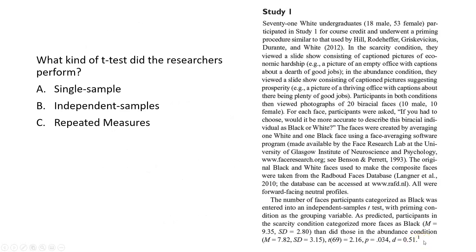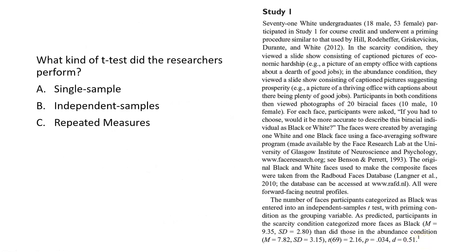What kind of t-test did the researchers perform? The answer is independent samples t-test. The way we know is that it says right here they did an independent samples t-test, and the other way we know is that they compared two groups with each other — the scarcity versus abundance conditions.